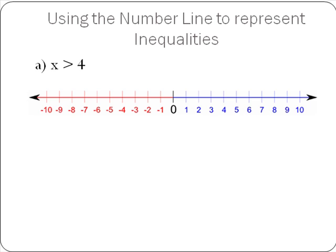Looking at our first inequality — x is greater than 4, where x is an element of the integers — we use dots to show which integers are possible solutions. So 5, 6, 7, 8, 9, and 10 are all possible solutions. But all integers greater than 10 are also possible solutions, so to show this, we put an arrow at the end of the number line.